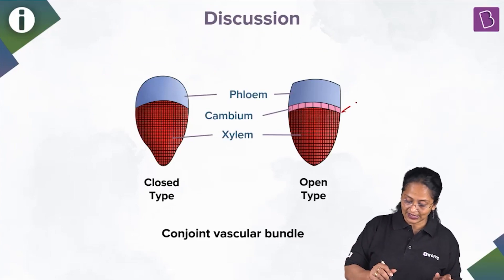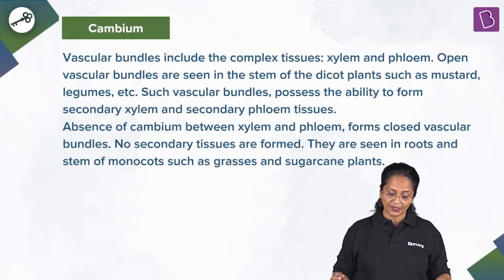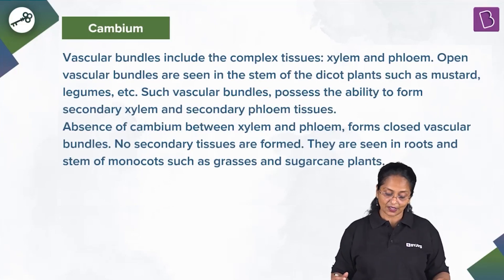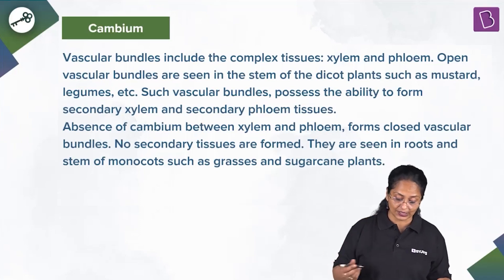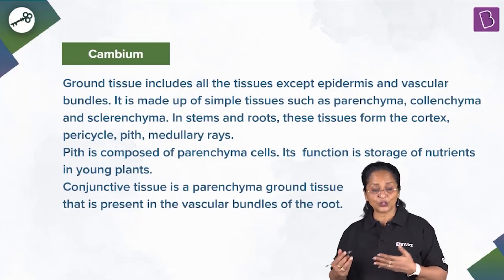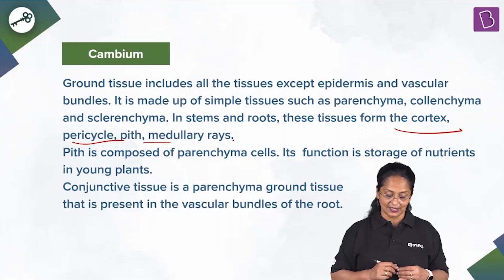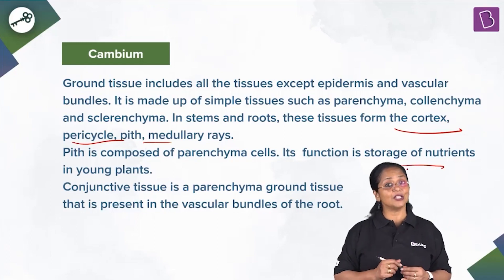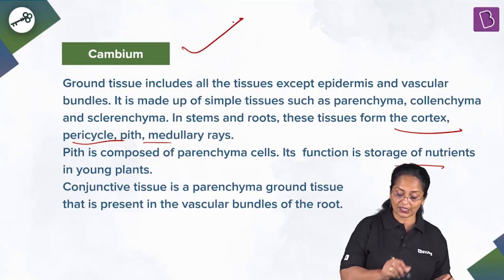You can see in the picture the cambium — the pink line — separating the phloem from xylem. That is open; the closed type does not have cambium. Open vascular bundles are seen in dicot plants such as mustard and legumes, possessing the ability to form secondary xylem and phloem. Closed vascular bundles, seen in roots and stems of monocots such as grasses and sugarcane, lack cambium and form no secondary tissues. So the right answer: closed vascular bundles lack cambium.